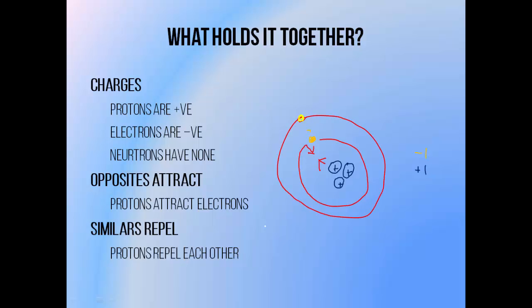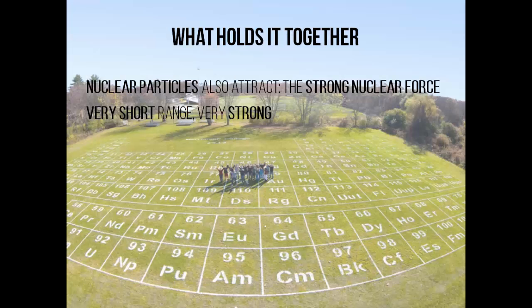On the other hand, like charges repel each other. Two electrons will push each other away because they're both negatively charged, and two protons will do the same because they're both positively charged. This electromagnetic repulsion is greatest when particles are close together. Protons are packed together very tightly inside an atomic nucleus, so you might expect them to repel each other, causing the whole thing to fly apart. They obviously don't, since atoms exist.